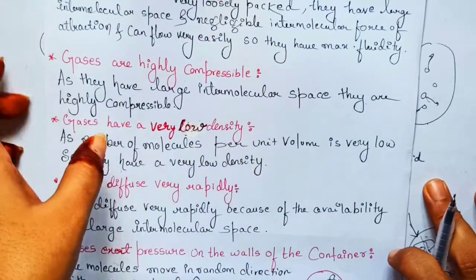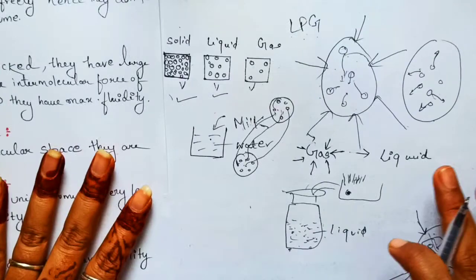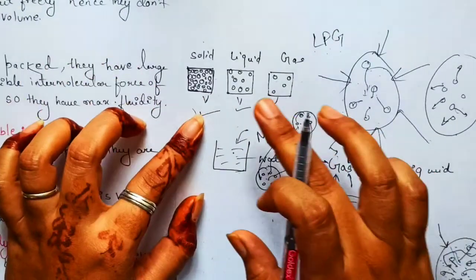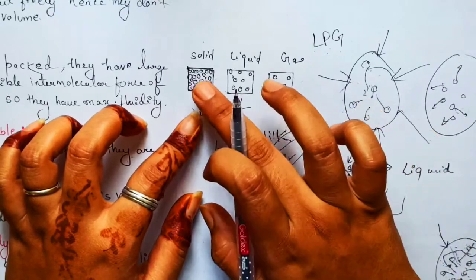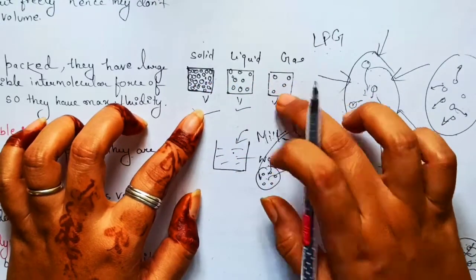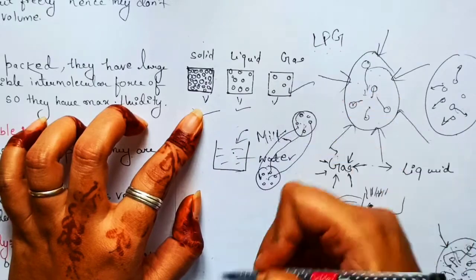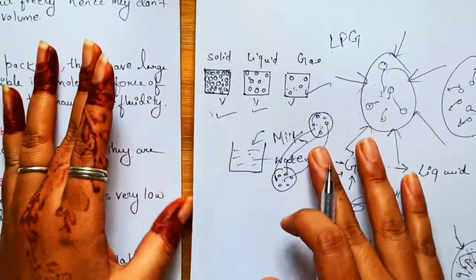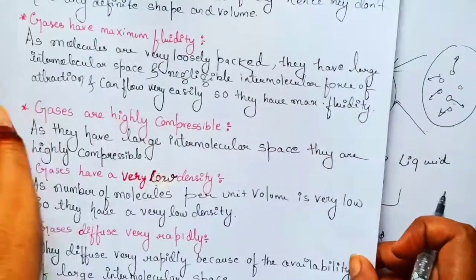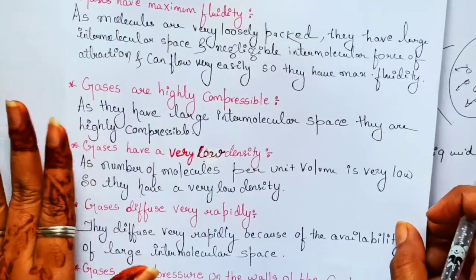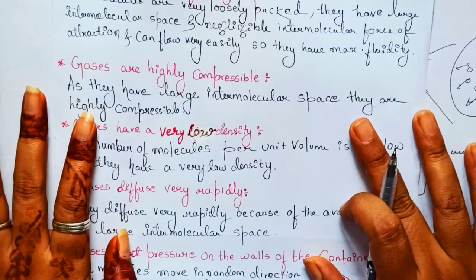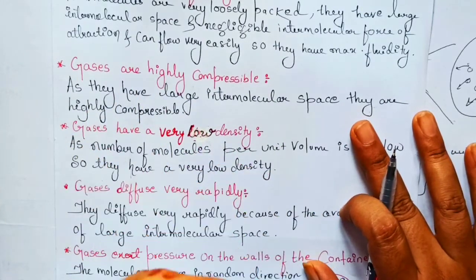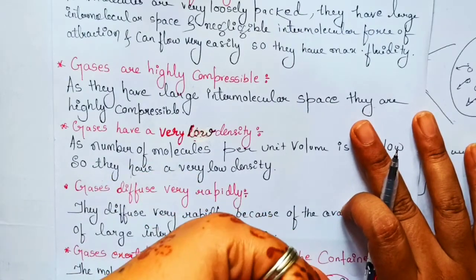The next property: gases have very low density — you can say the least density. If we take the same volume of solid, liquid, and gas, the number of molecules in the gas is much less than in solid or liquid. That's why gases have the lowest density. Comparing the three states, solid has the highest density, then liquid, and gases have the lowest density.